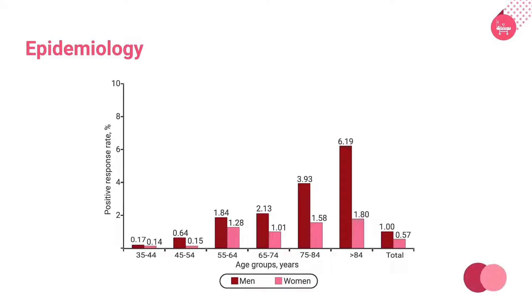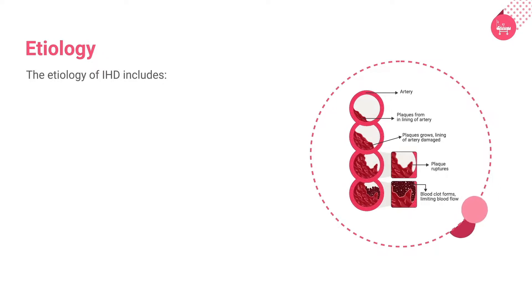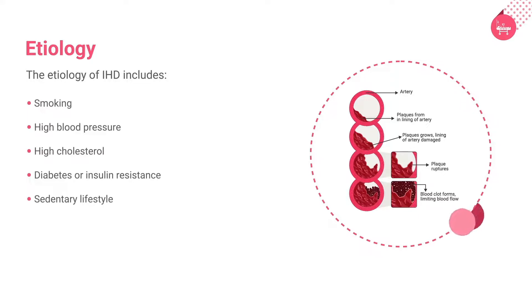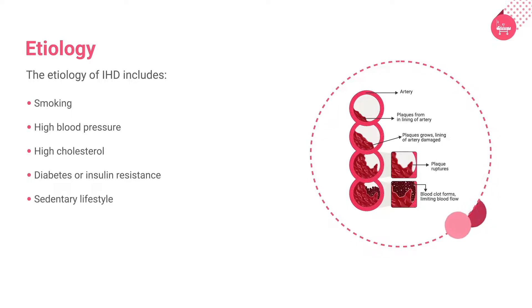Next, we will explore the etiology of IHD. IHD begins with damage or injury to the inner layer of a coronary artery, sometimes as early as during childhood. The chemicals in tobacco smoke harm blood cells and can damage the function of the heart and the structure and function of blood vessels, which increases the risk of atherosclerosis.